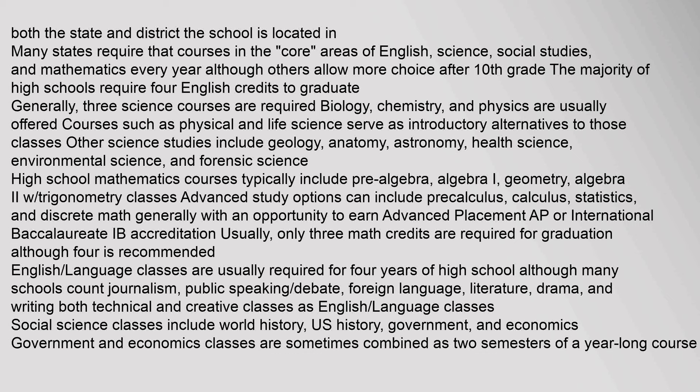English Language classes are usually required for four years of high school, although many schools count Journalism, Public Speaking, Debate, Foreign Language, Literature, Drama, and Writing — both Technical and Creative — as English Language classes. Social Science classes include World History, U.S. History, Government, and Economics. Government and Economics classes are sometimes combined as two semesters of a year-long course.